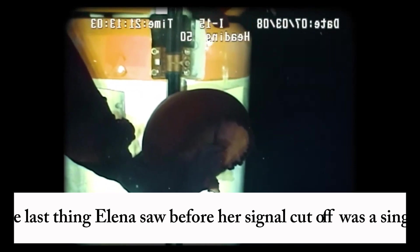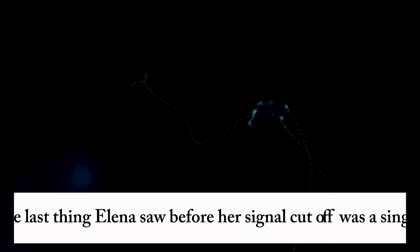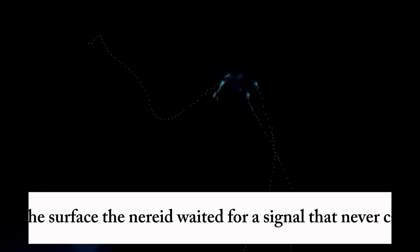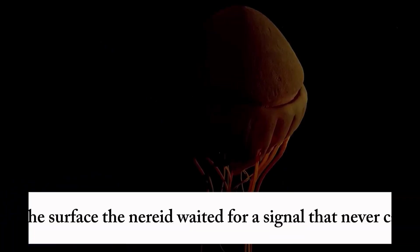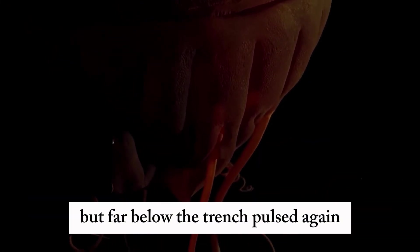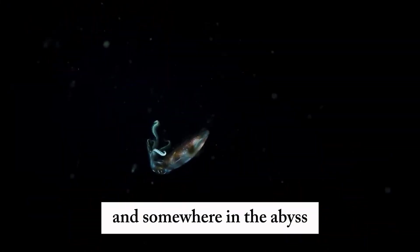The last thing Elena saw before her signal cut off was a single glowing eye opening in the dark. On the surface, the Nereid waited for a signal that never came. But far below, the trench pulsed again. And somewhere in the abyss, the anchor had shifted.